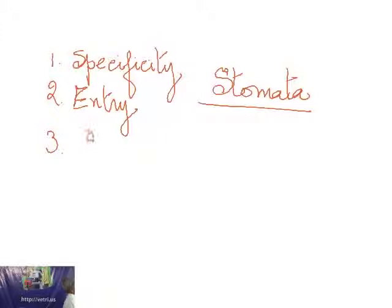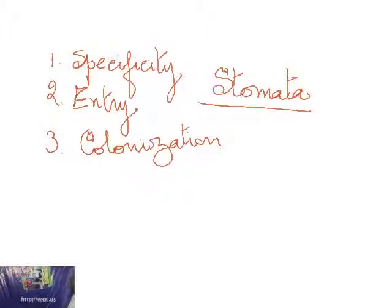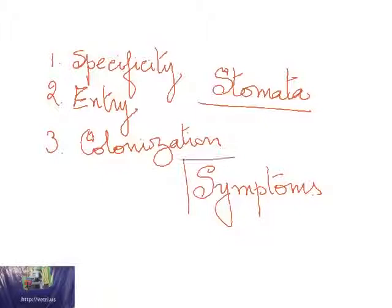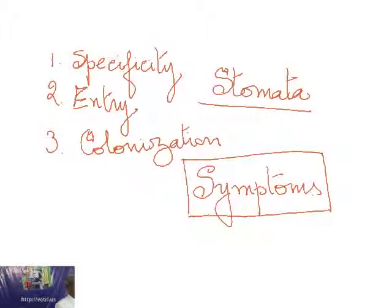Third, the pathogen must be able to colonize — colonization is very important. Once colonization takes place, the host starts showing what is known as symptoms. These symptoms shown by a plant, animal, or human being are useful because only by seeing the symptoms are you able to understand that a particular plant or animal has a disease. The diseases are within the body and they show themselves only through symptoms.